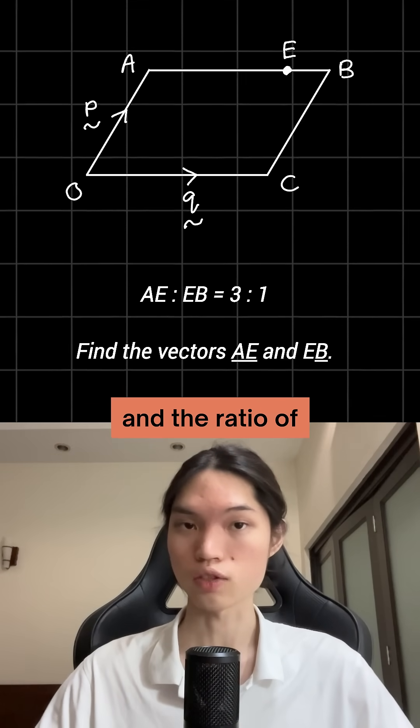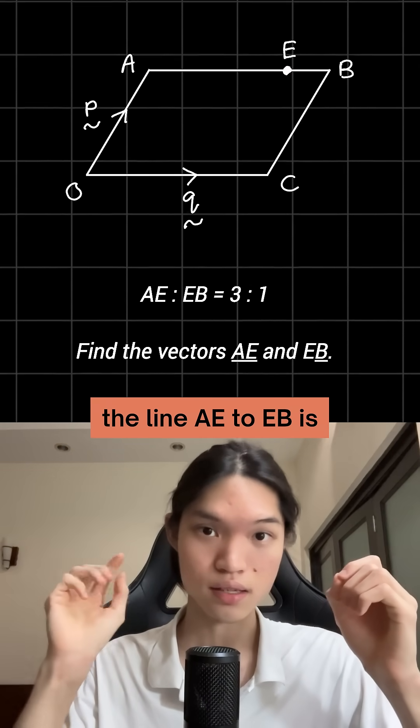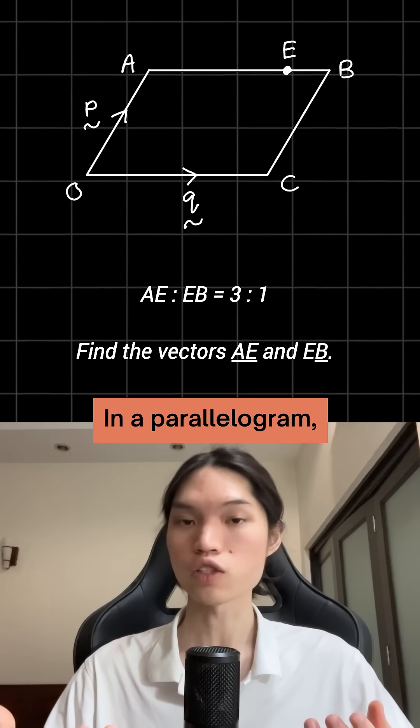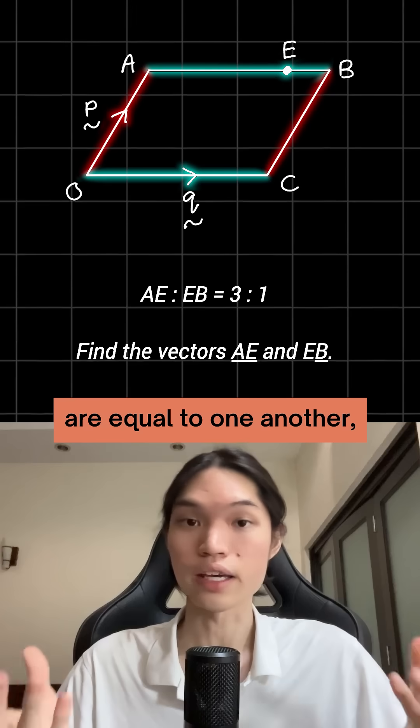we have a parallelogram, and the ratio of the line AE to EB is 3 to 1. In a parallelogram, the opposite sides are equal to one another.